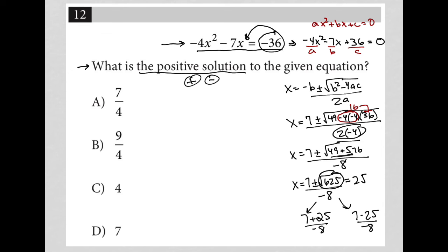So 7 plus 25 over negative 8, let's go here for space. 7 plus 25 over negative 8 equals 32 over negative 8, which equals negative 4. So that is an answer, but it's obviously not the solution we're looking for because we're looking for the positive solution.